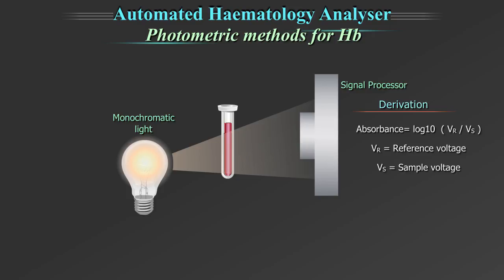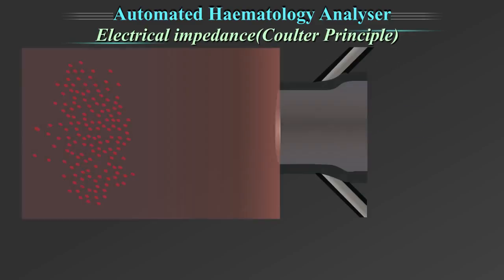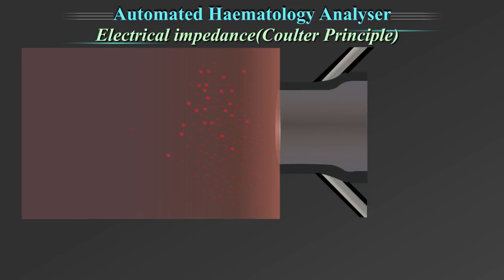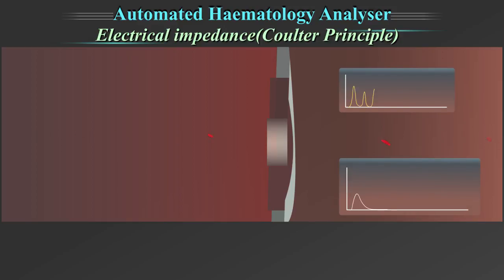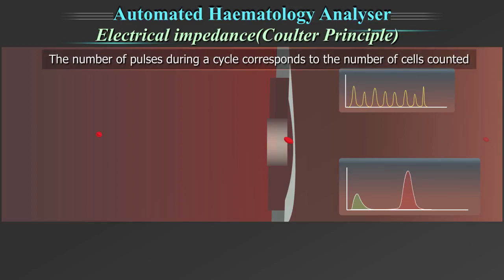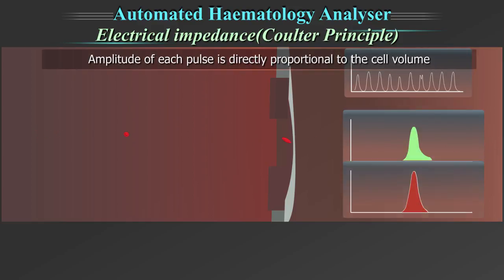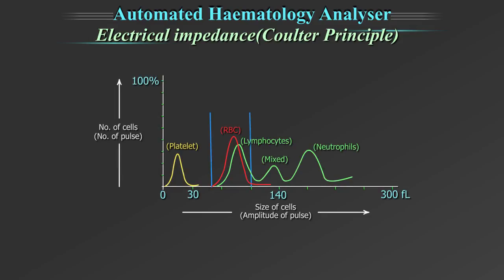The absorbance of the solution is measured by a photosensor in the hemoglobin flow cell, calculating the hemoglobin concentration. Second is electrical impedance, also known as the Coulter principle, which is used to count white blood cells, red blood cells, and platelets as they pass through an aperture. As each cell is drawn through the aperture, a change in electrical resistance occurs, generating a voltage pulse. The number of pulses during a cycle corresponds to the number of cells counted, whereas the amplitude of each pulse is directly proportional to the cell volume. The different cell components are depicted in respective histograms as per their size distribution.